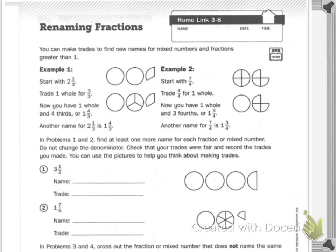Example one: start with two and one third. You have your two wholes and your one third. It says trade one whole for three over three. Now you have one whole, one whole split into three — still a whole — and your one third left over. Now you have one whole and four thirds, or one and four over three. Another name for two and one third is one and four thirds.